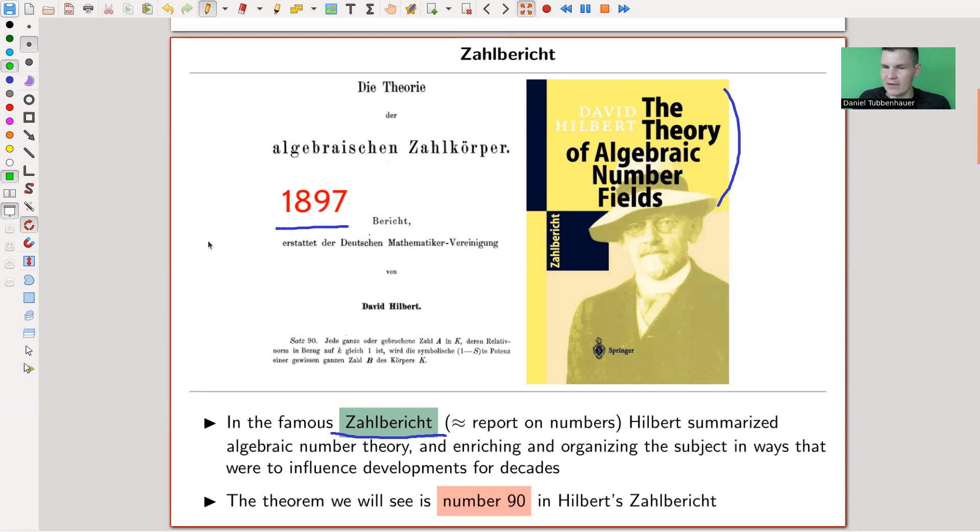But the point is, Hilbert summarizes and reinvents algebraic number theory. And during this, it has a very specific style that always goes, theorem one, theorem two, theorem three, theorem four, all the way down to, I actually haven't checked, but 90 appears. And this 90th one is the one we're going to talk about.